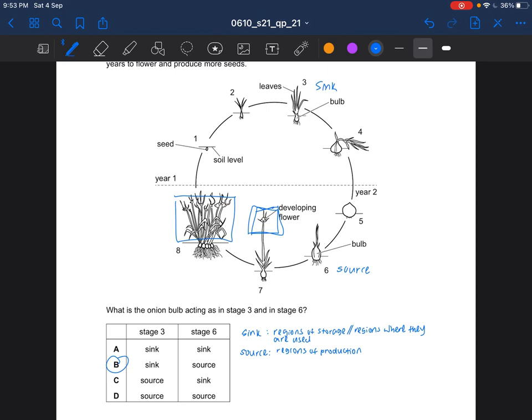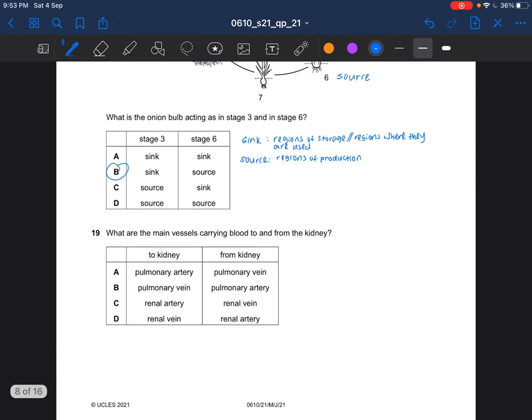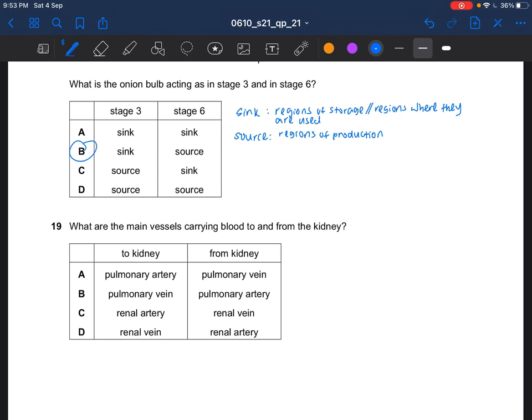Next question. What are the main vessels carrying blood to and from the kidney? The kidney. It would be the renal renal. So it can't be A, it can't be B. The answer would be C. The renal artery carries blood from the heart to the kidney. The answer for question 19 would be C.